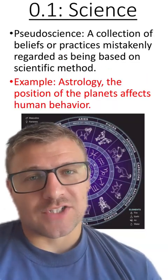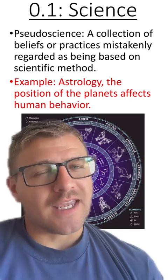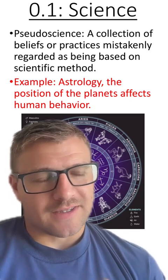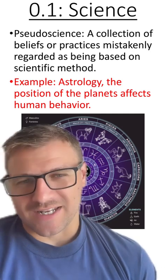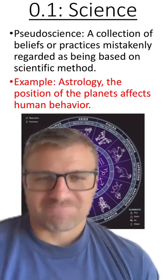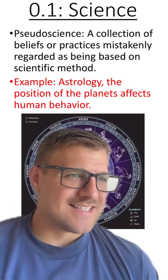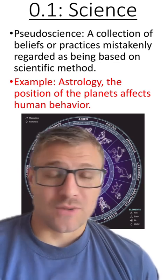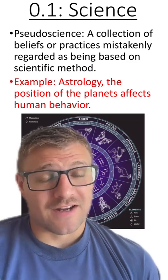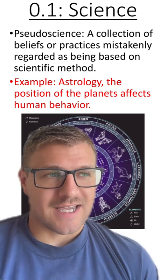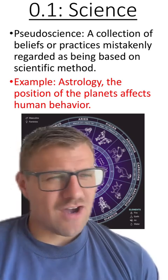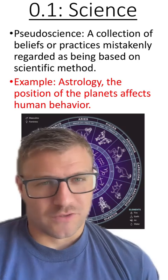Pseudoscience is a collection of beliefs or practices mistakenly regarded as being based on the scientific method. Astrology is the thought that the positions of the planets affect human behavior, basically. And there is no scientific disprovable evidence that supports this. There's actually a lot of evidence out there that disproves this. Astrology seems like it is scientific because they take observations, but they're not disprovable observations.